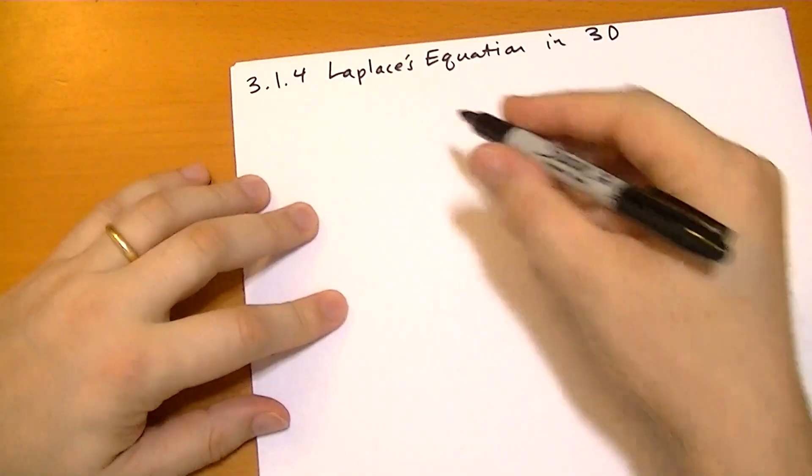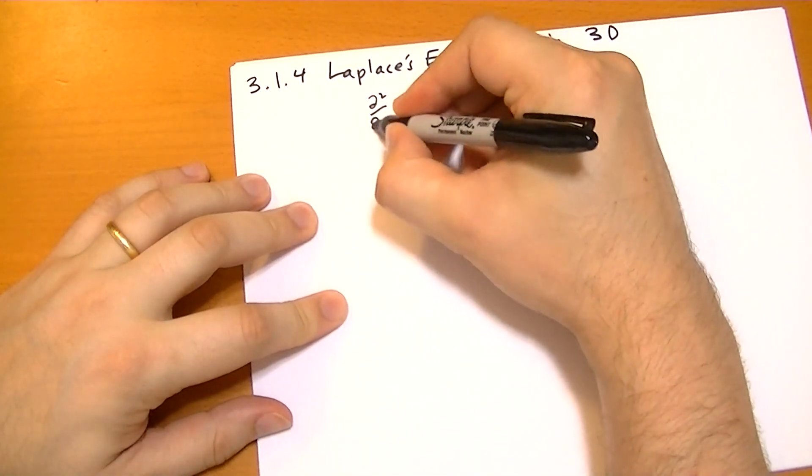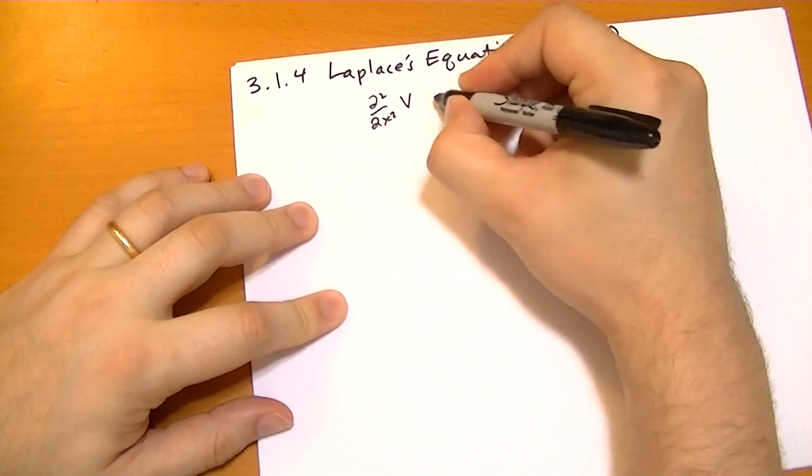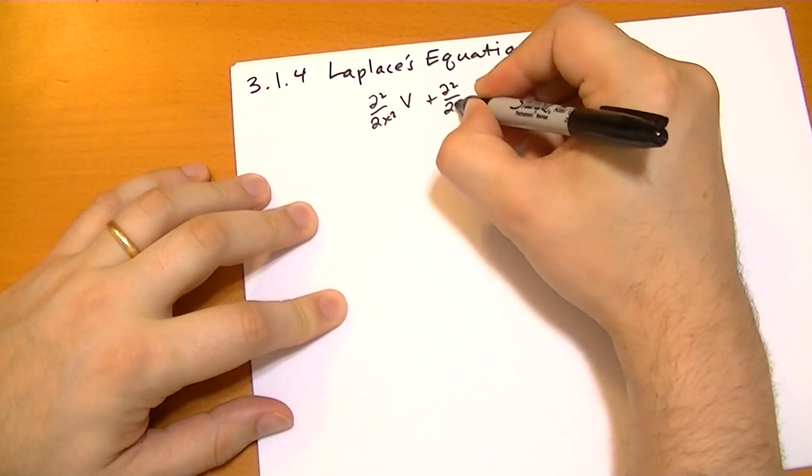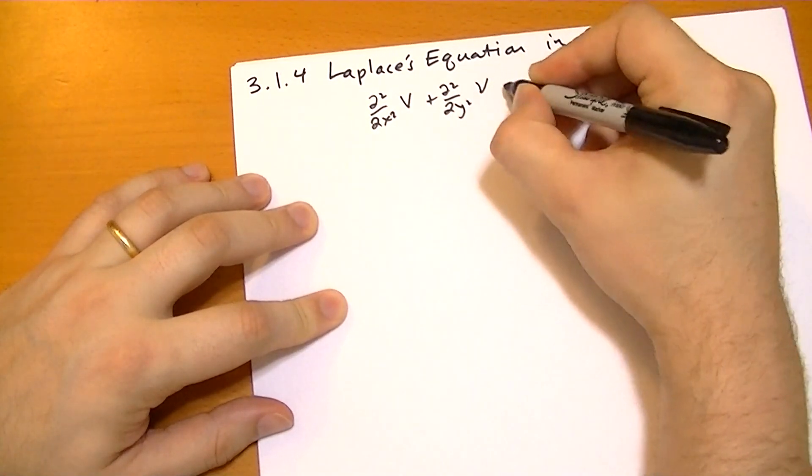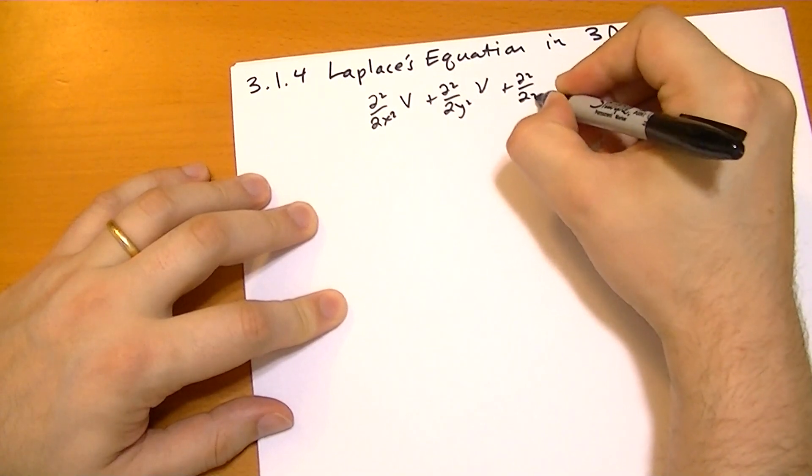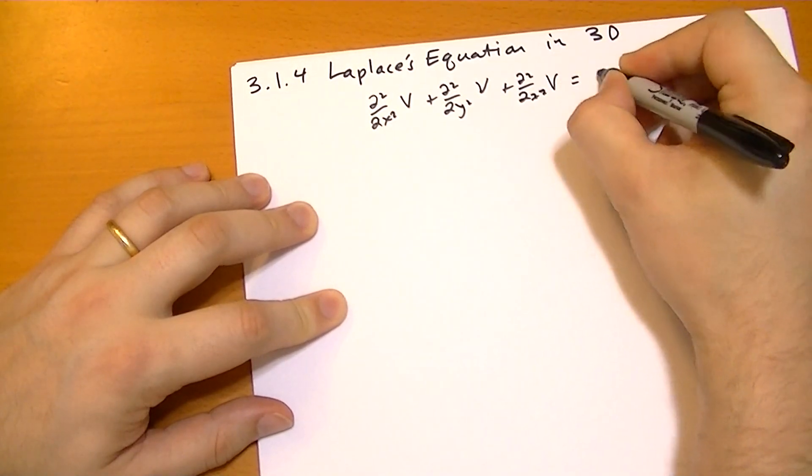So Laplace's equation in three dimensions is d squared by dx squared of the potential plus d squared by dy squared of the potential plus d squared by dz squared of the potential all has to equal zero.